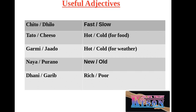Naya means new, purano means old. Dhani means rich, garib means poor.